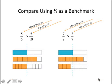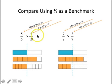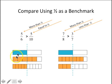Using benchmarks can be really helpful for making comparisons. Here we're making comparisons using one-half as a benchmark. I can look at five-sixths and think: that's more than one-half, because three-sixths is equivalent to one-half. And I'm comparing five-sixths to five-tenths, which is equal to one-half. So just using one-half as a benchmark, I can say that five-sixths is greater than five-tenths, and we can see that's true when we look at these visual representations.